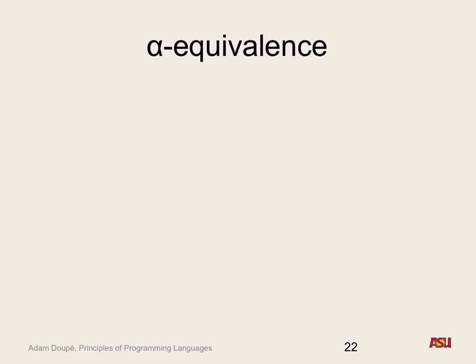So alpha equivalence is the same thing in our lambda calculus. We just replace all the meta variables. In your IDE — like Eclipse for Java — you can right-click on a parameter name and say rename, and rename that parameter to whatever you want. The function is still the same. It identifies every instance of that parameter usage in the function and deals with shadowing and scoping rules. Even though you've renamed parameter names, it still computes the same thing.